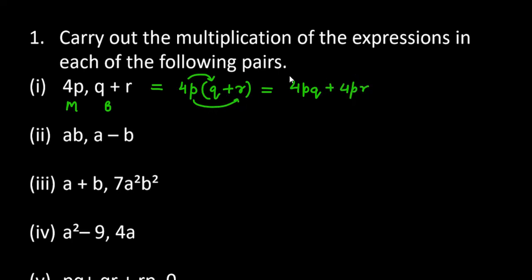Similarly, for the second one we have ab as monomial and we have a minus b as binomial. So what you will do is you will multiply ab with a, so it will be a squared b. You will multiply ab with b, so it will be minus ab squared. Why b squared? Because we have two b's.